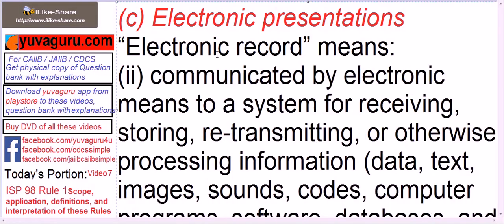The second element: communicated by electronic means to a system for retrieving, storing, retransmitting, or otherwise processing information. It means it must be sent by electronic means — either email or something similar. Receiving, storing, retransmitting, or otherwise processing information — we must be able to do all these functions. Only then can it be called a record; otherwise, it is not a record.